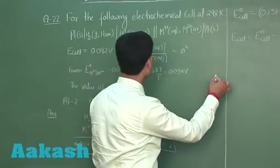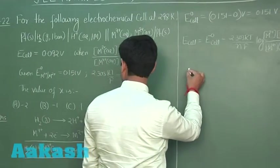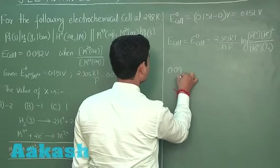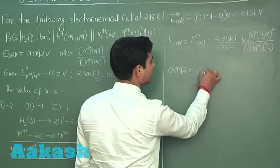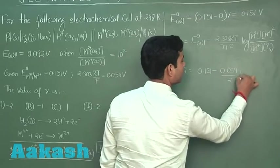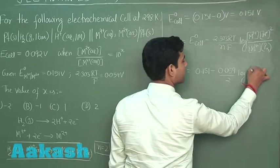So by putting all these values, we can easily write E cell which is equal to 0.092. E naught cell is 0.151 minus 0.059 upon 2 log of 10 to the power x.